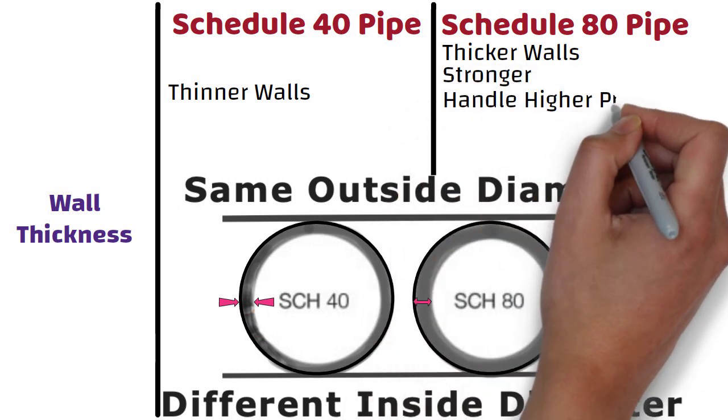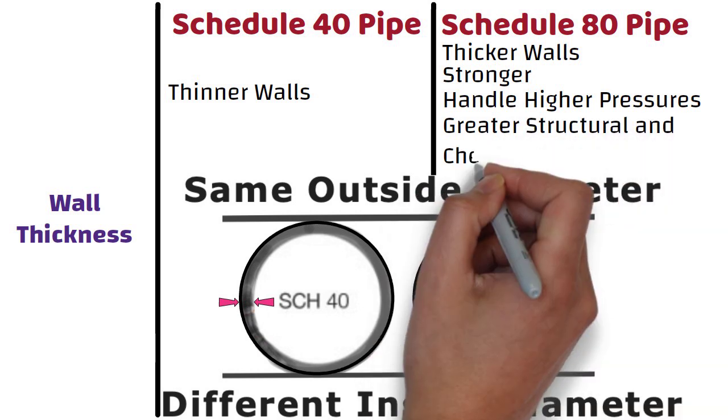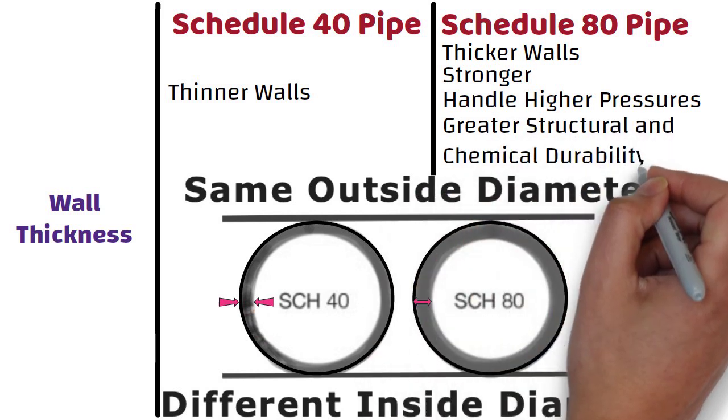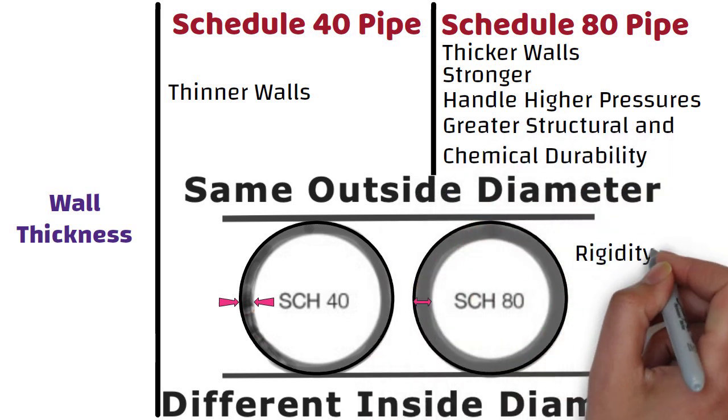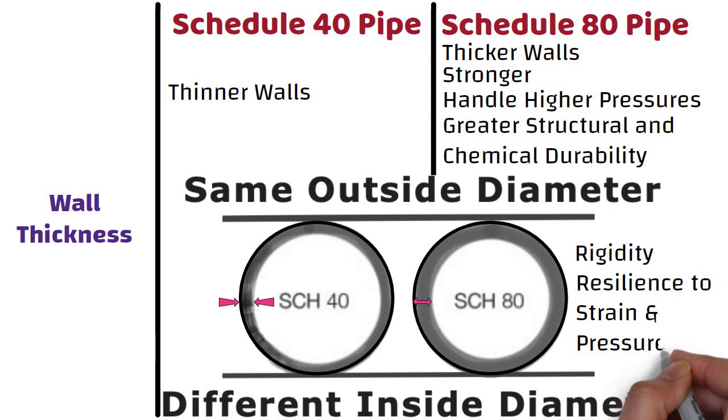Because the pipe is thicker and stronger, schedule 80 can handle higher pressures, greater structural and chemical durability, rigidity, and resilience to strain and pressure.